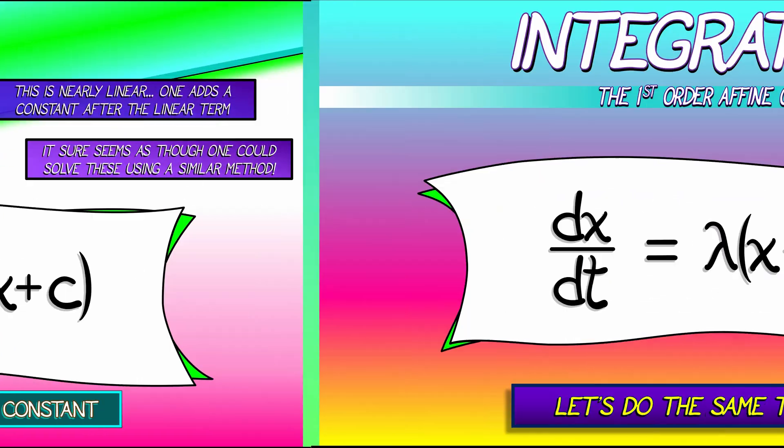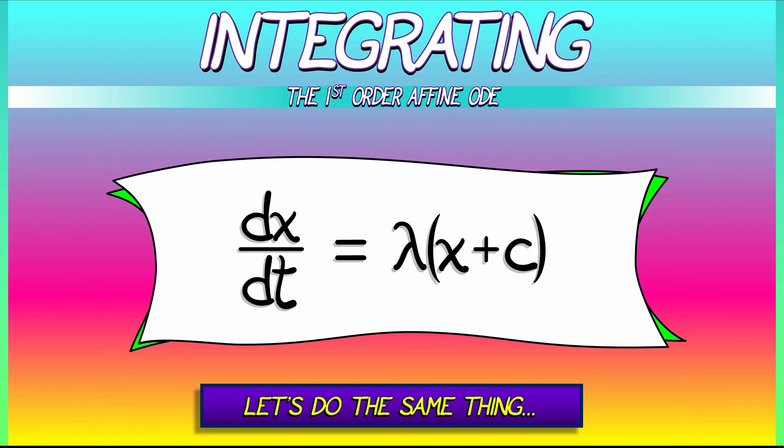Let's see. Let's follow the same method we did before, separation and integration. We start off with our differential equation dx dt equals lambda times quantity x plus c. Now we're going to separate. We're going to put all the x terms on one side, all the t terms on the other.